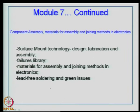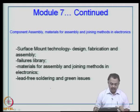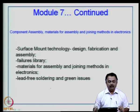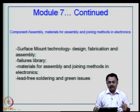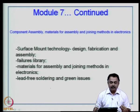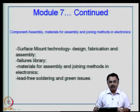We will begin with another lecture concerned with module 7 of this video course on electronic systems packaging. As seen in previous lectures, we are discussing component assembly, materials for assembly, and joining methods in electronics. Joining methods typically refers to the soldering process. We have had a glimpse of soldering methods and methods that can replace soldering, such as conductive adhesives used to join a flip chip, BGA, or CSP. We will focus on the mass or volume manufacturing scenario, which is soldering.